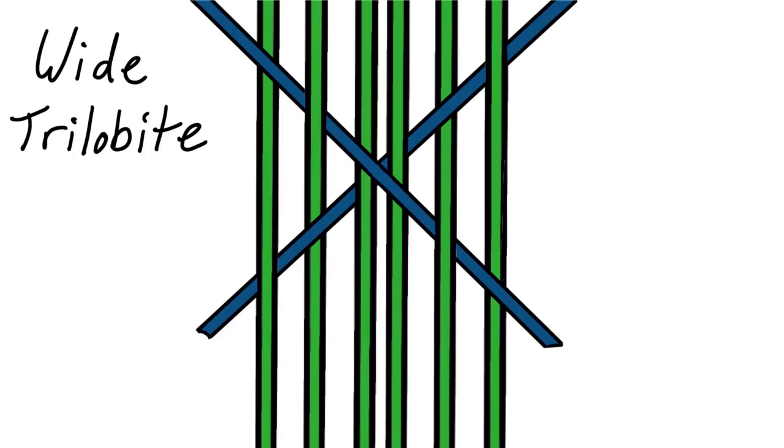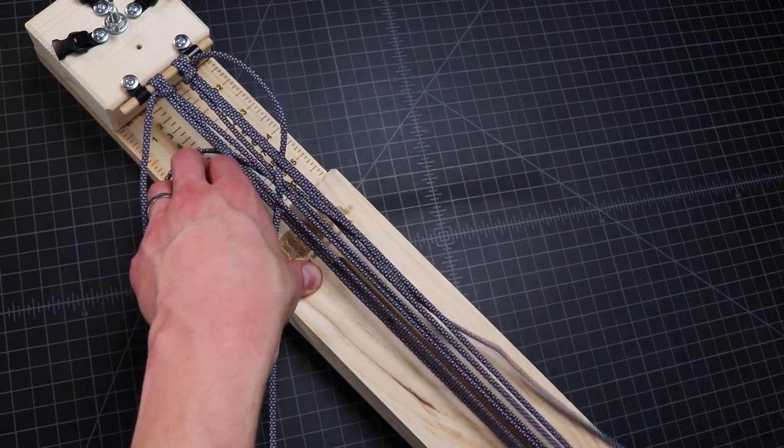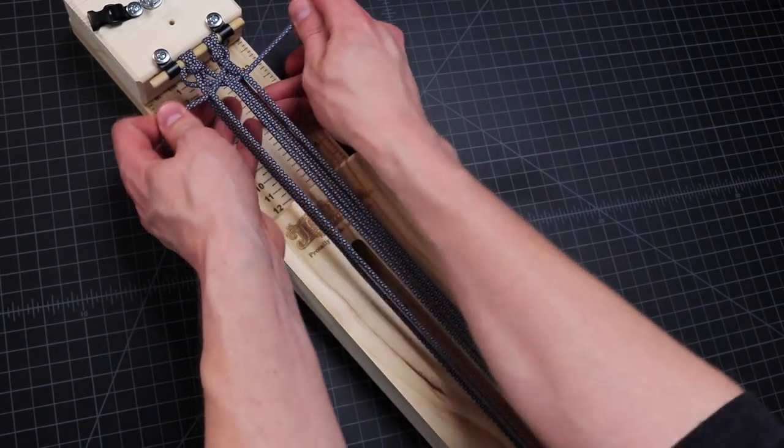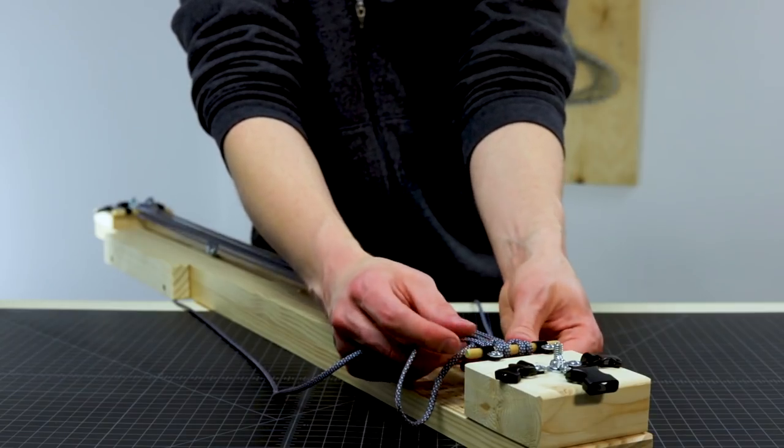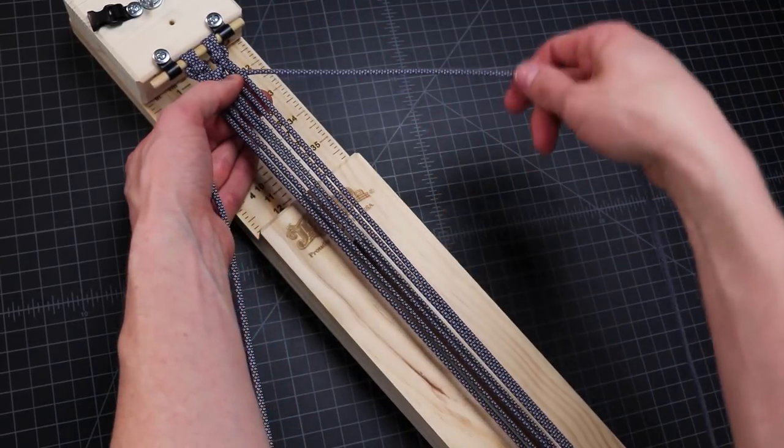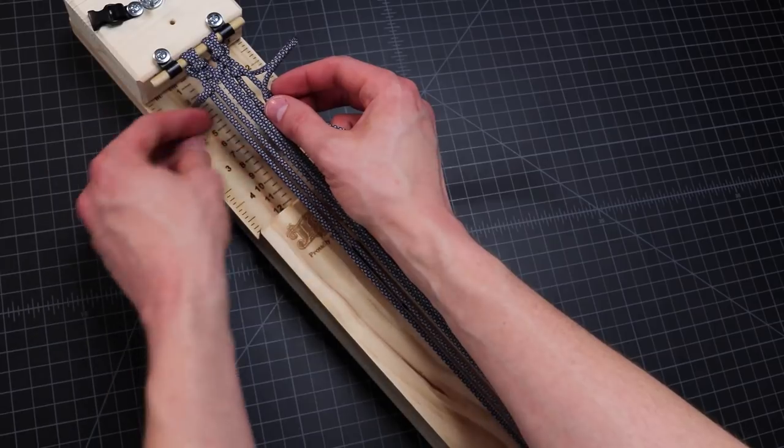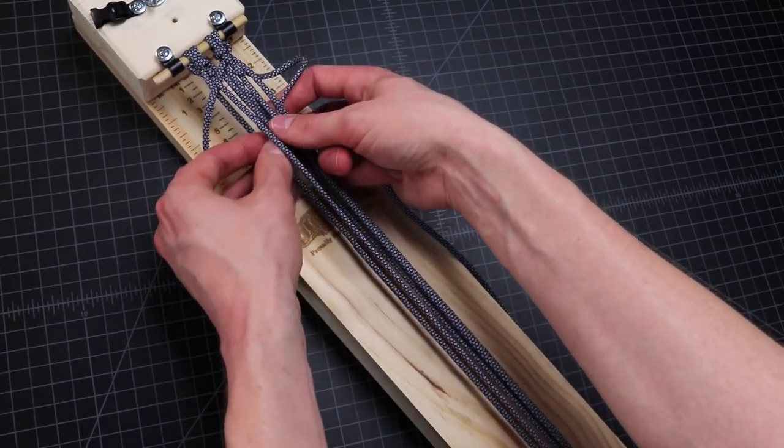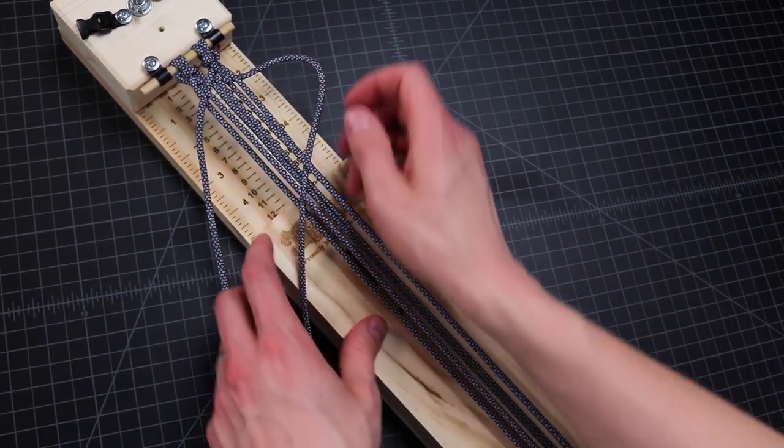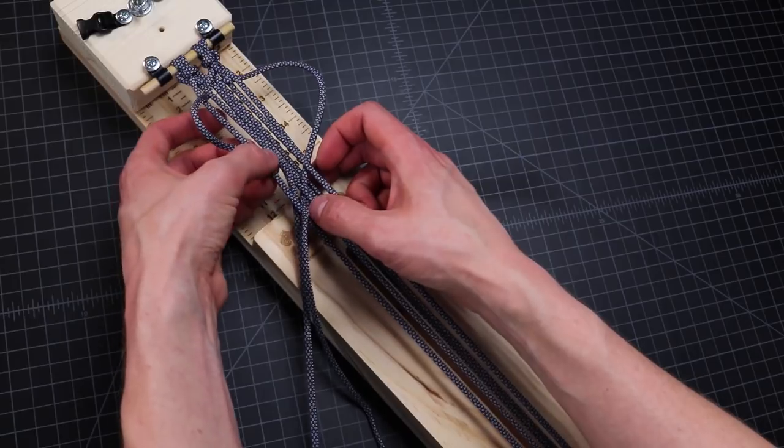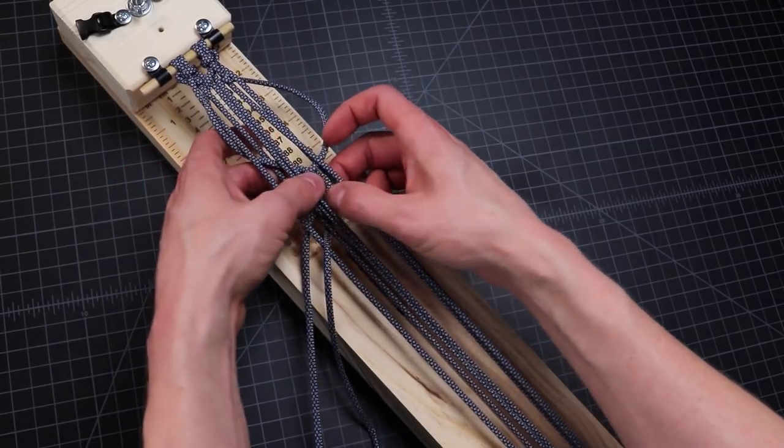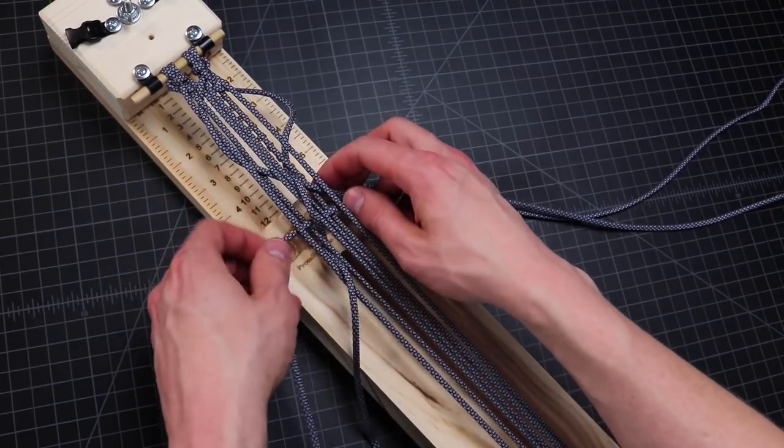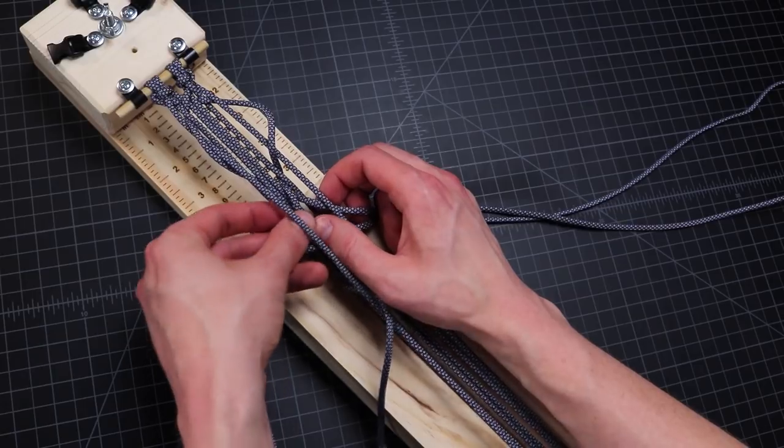Once you've got that down, go ahead and pull the cord through and tighten it down. Alright, then just tighten those up right underneath your hitches. And then we're just going to do the same thing again. This right side cord is always going to go over first, and this left side cord is always going to go underneath first. So we'll make our X again. There's our X. And we've just got to pull the slack through.